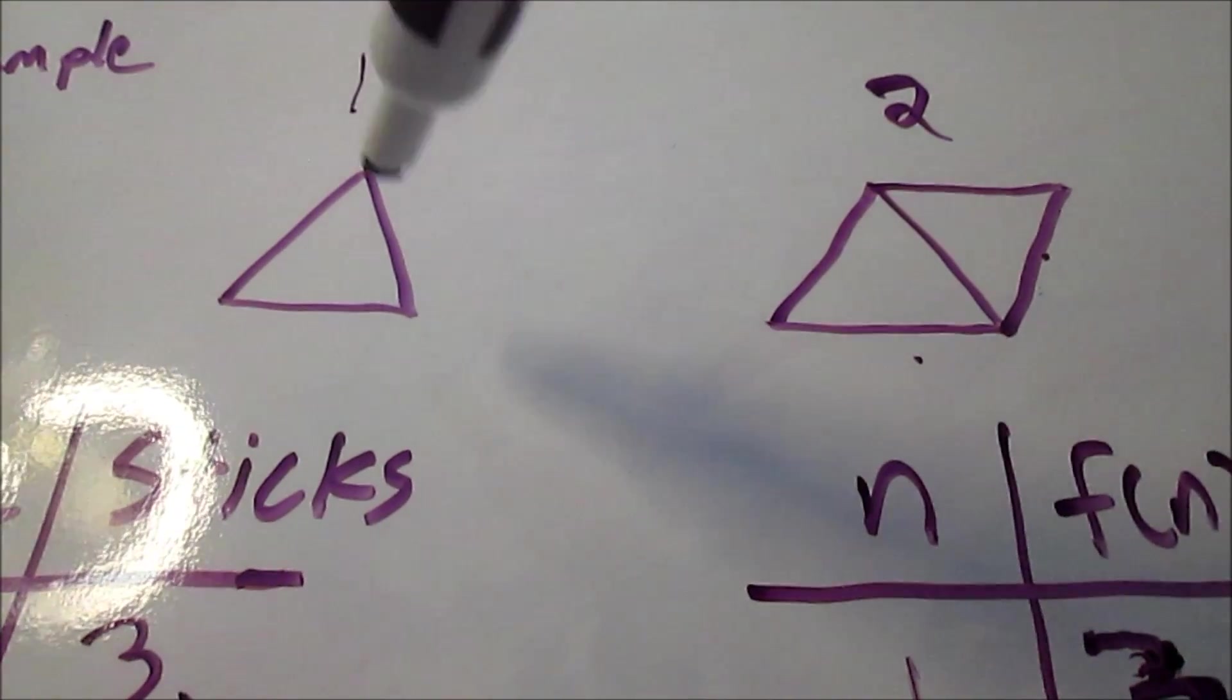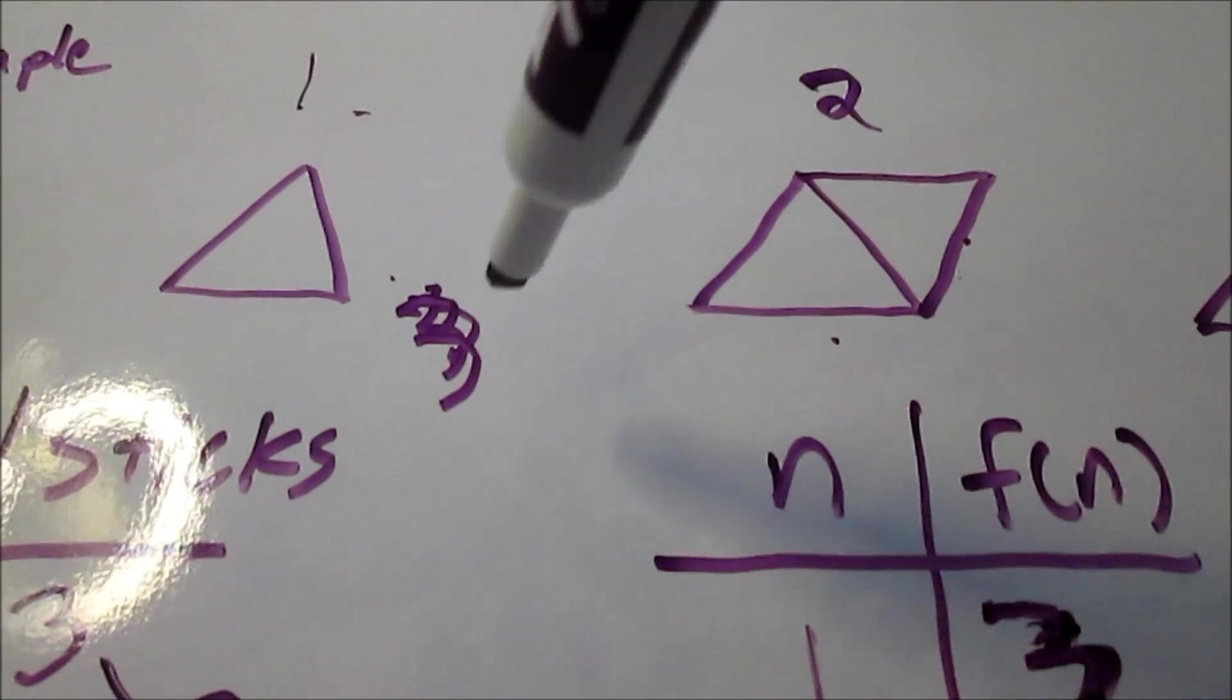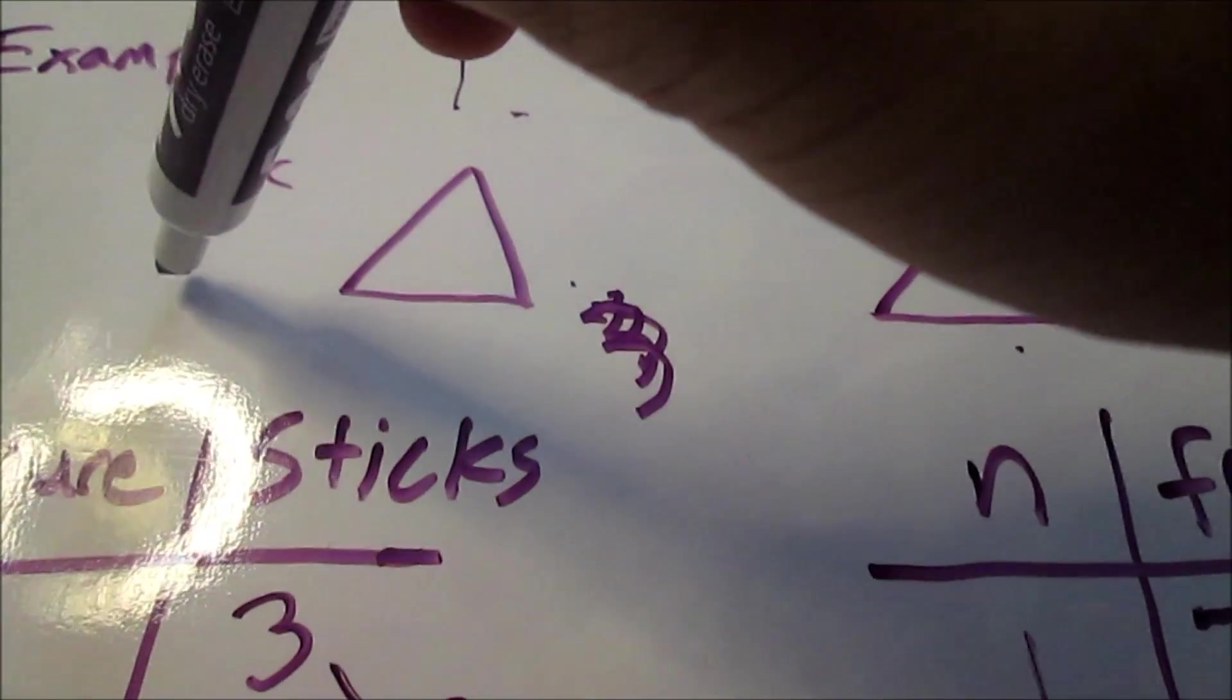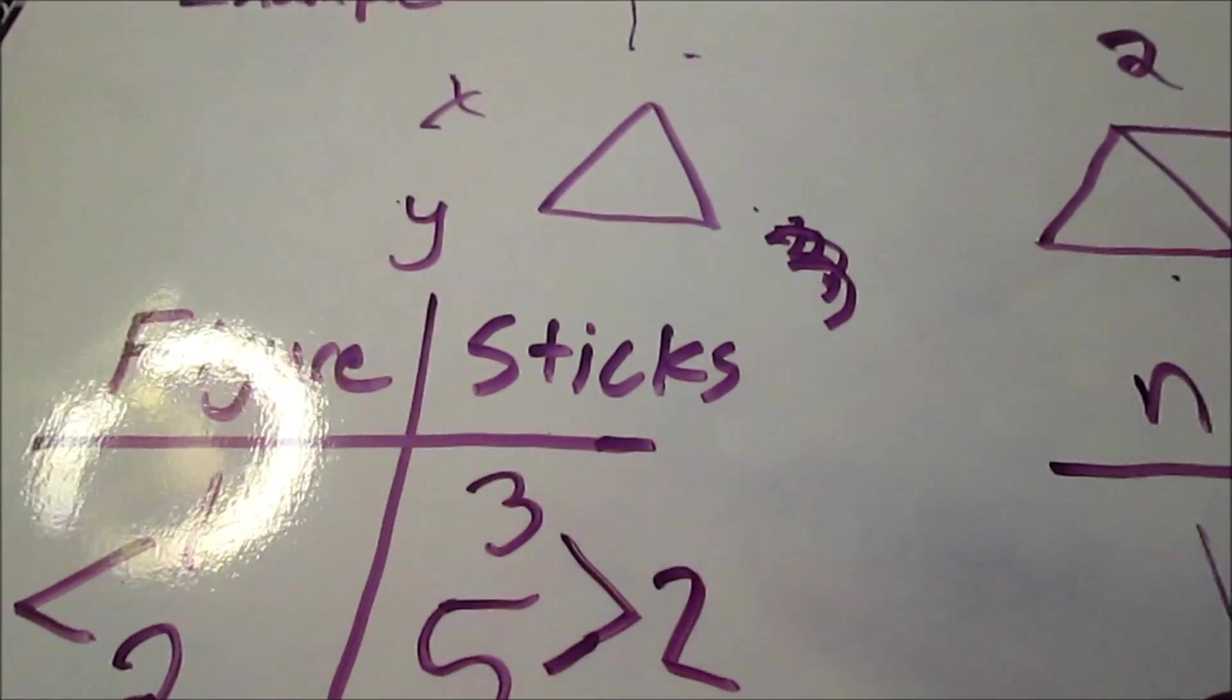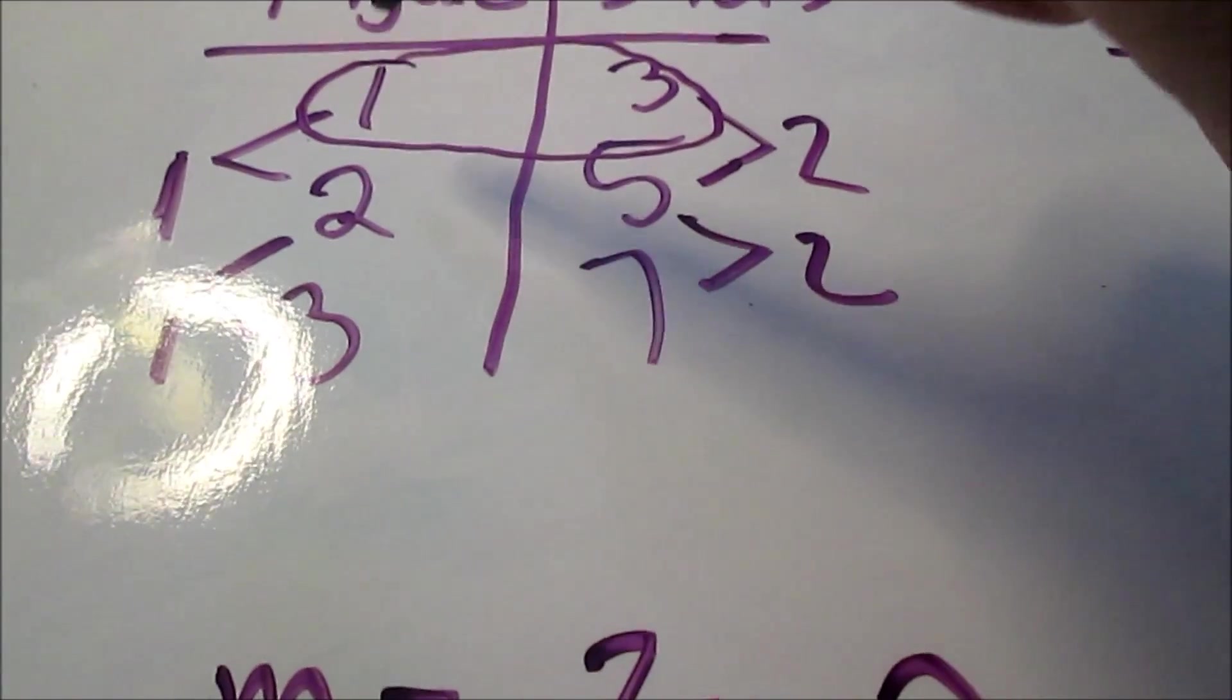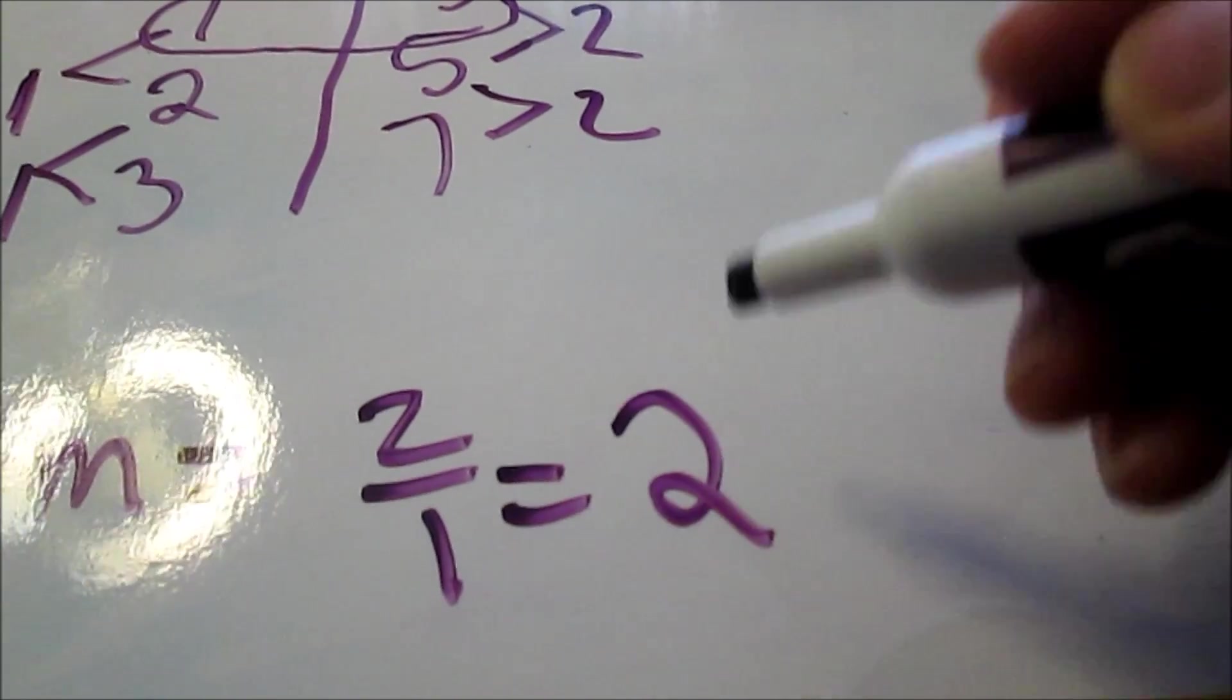Now, what's important when finding the rule is to know how does this input right here, 1, determine this output. There are 3 sticks in figure 1. How do I get from 1 to 3? Some people make the mistake of going across. How do I get from 3 to 5 or 5 to 7 or 1 to 2? That's not enough. You need to know how to get from the x to the y or the n to the f of n or the figure to the number of sticks. To do that, I use one example. There are 3 in this table. I'm using the first one, 1 and 3.